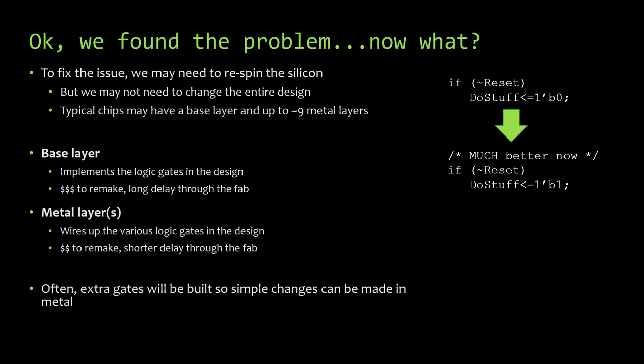One thing that's common for physical designers to do is that whenever they're building a block, if they have any white space in that area, they will actually put extra gates that are not connected to anything. They're just there on the off chance that there's a bug and you need a new gate and want to wire it up. It's kind of, if you're building the silicon anyway, why not put some useful spare gates in it?